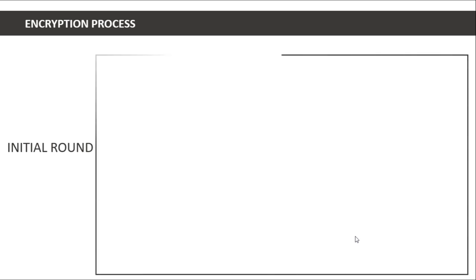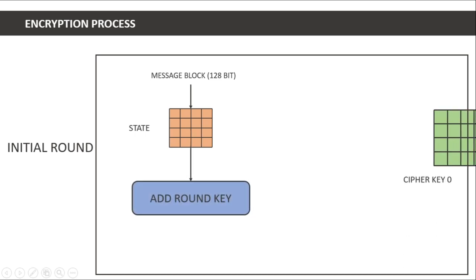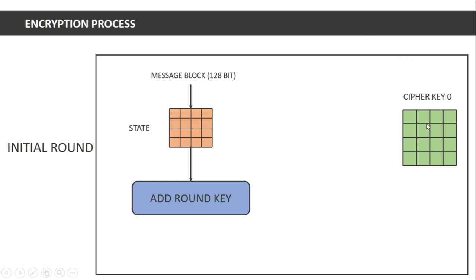Now the encryption process. There are three types of rounds: the initial round, the main round, and the final round. In the initial round, the 128-bit message block — for example 'my name is Sharma' — is divided into 128-bit chunks. Each chunk is converted into a state, and the cipher key zero is XORed with the message state in what is called the add round key step.